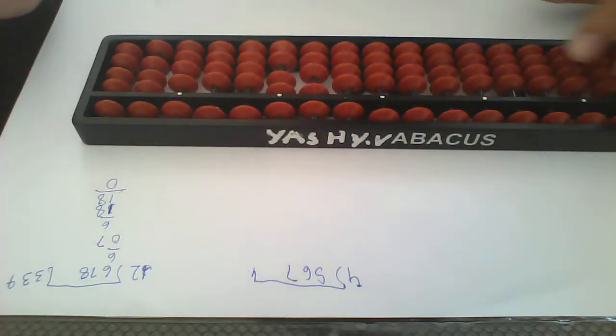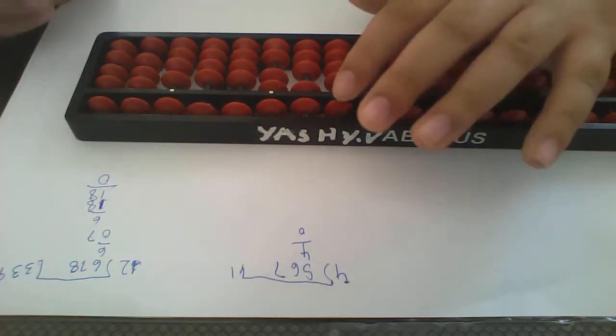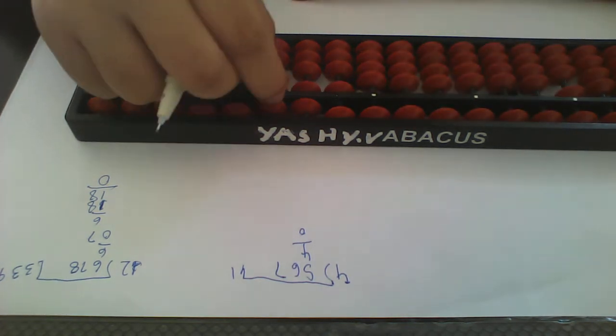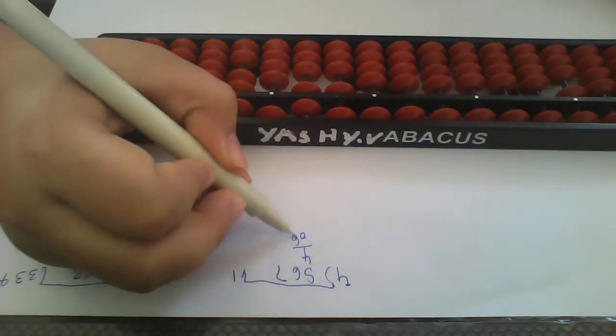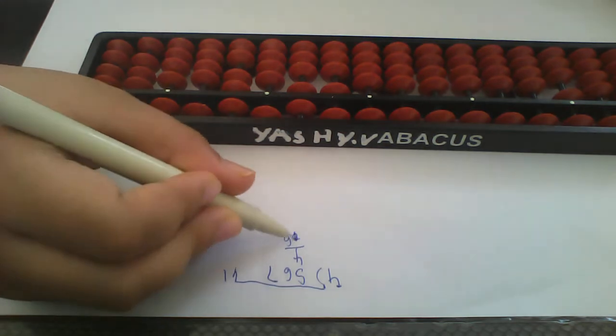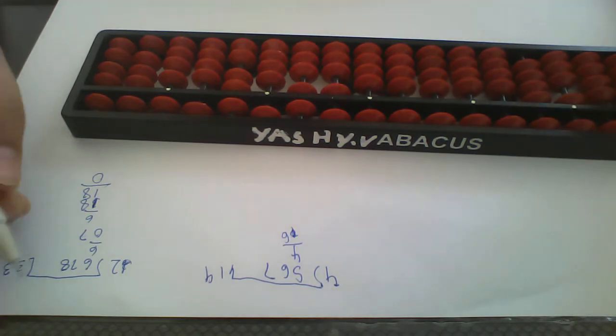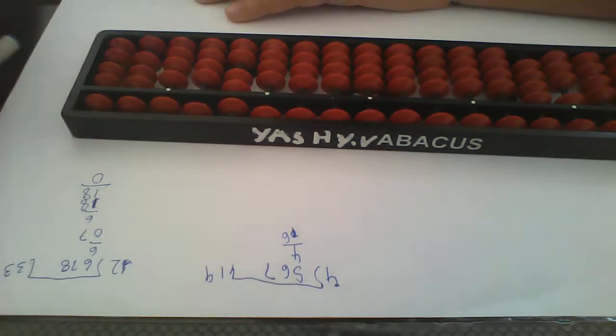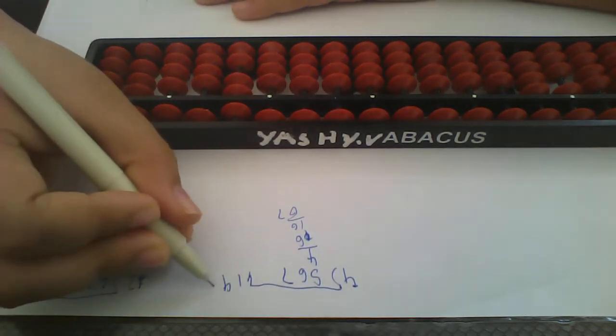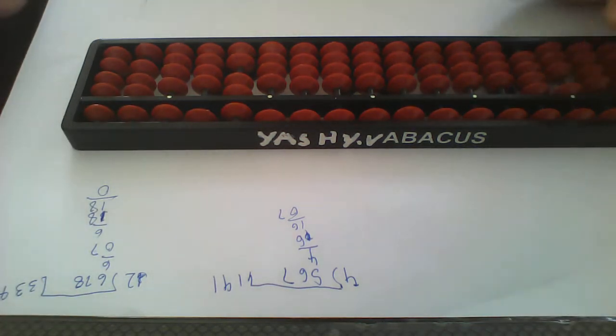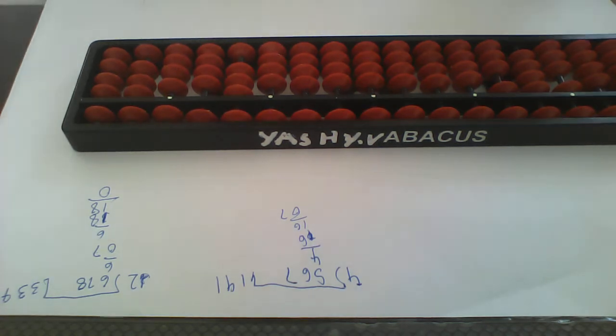Here we will put 1. So reminder will be 1, 16. 16, right? 16 it will come in 4. We will put here 4. Minus 16. And the last number is left now. 7. Then we will put again 1. And then the remainder is 3, and answer is 141.